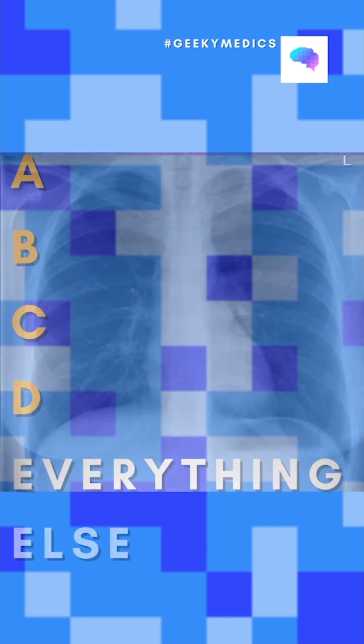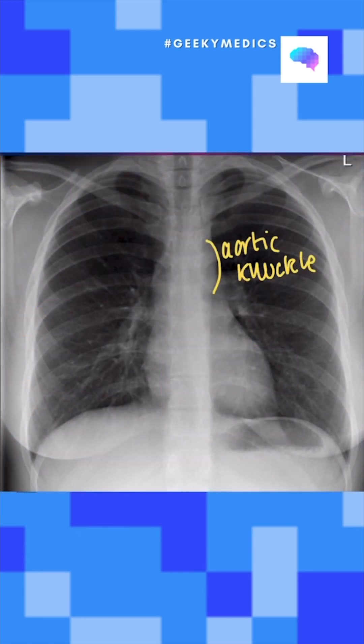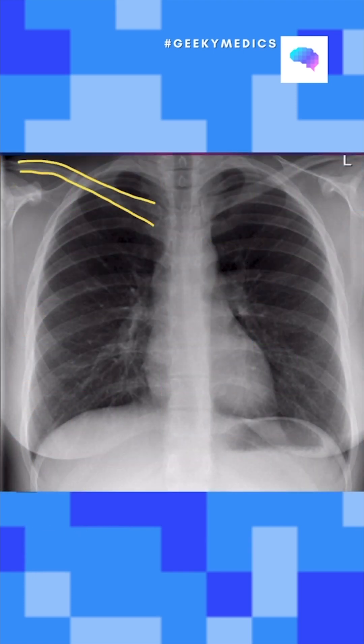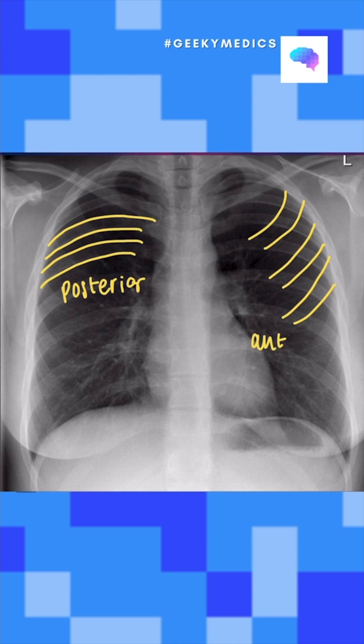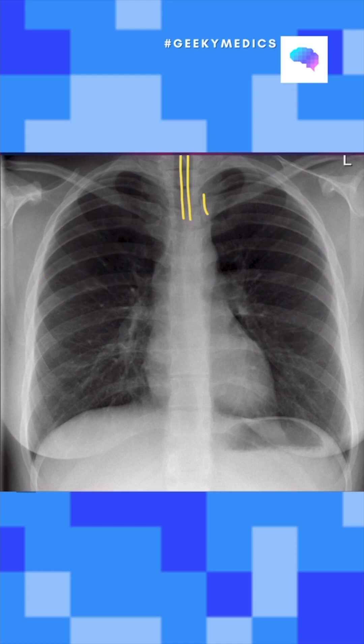E is for everything else. We want to look at things like aortic knuckles, long bones such as the clavicles and the ribs, as well as any foreign artefacts like endotracheal tubes or NG tubes.